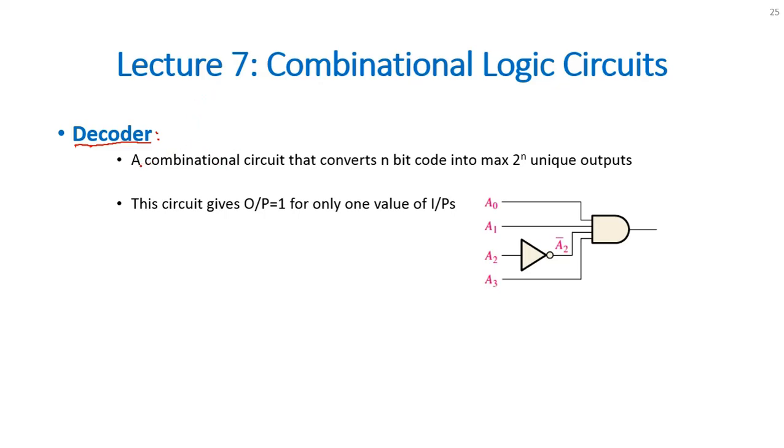By definition, a decoder is a combinational circuit that converts n-bit code into maximum 2 raised to power n unique outputs. For example, if you have a 4-bit code,